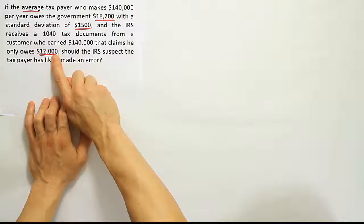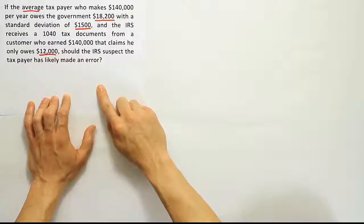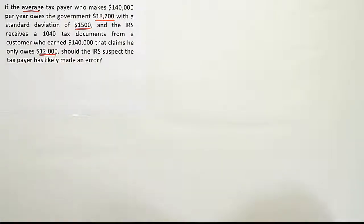And so if we think about that idea, whether it's unusual or not, we should think about possibly using the Z-score. Because the Z-score is one of the techniques we have to determine if something seems unusual. So let's go ahead and do that.